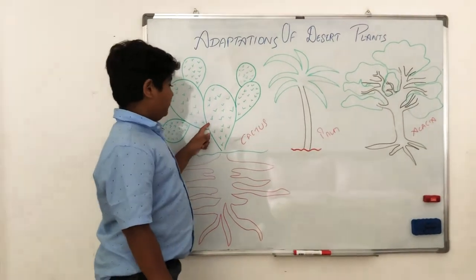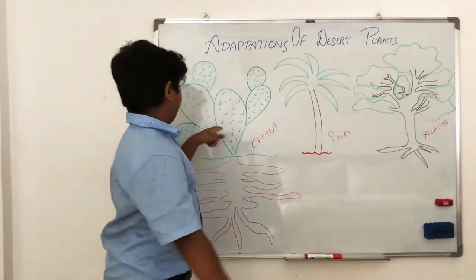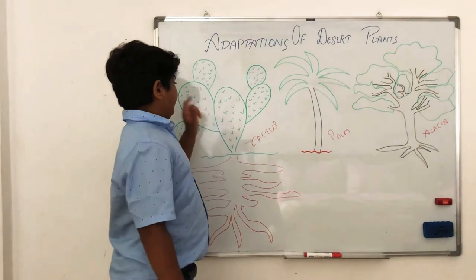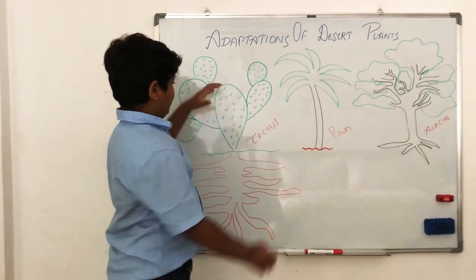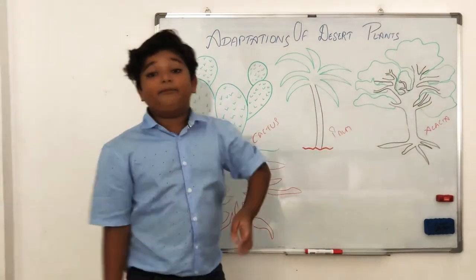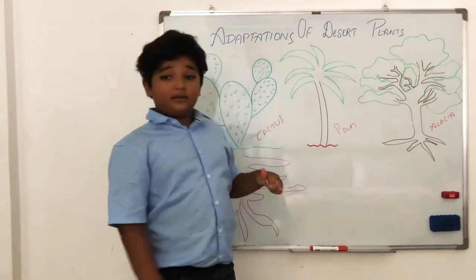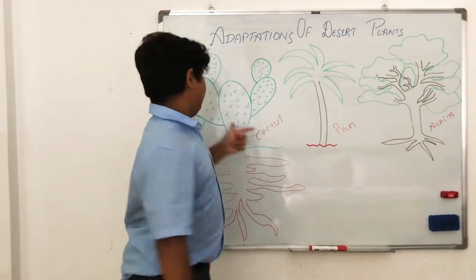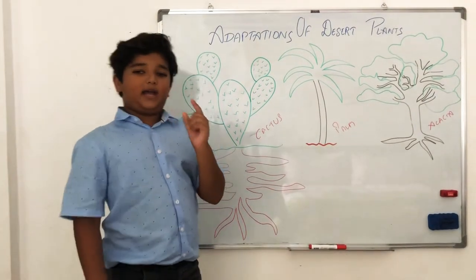When water is not available, the cactus can use the water that is stored in its big, thick, green stem. And that is just one fact about a cactus.